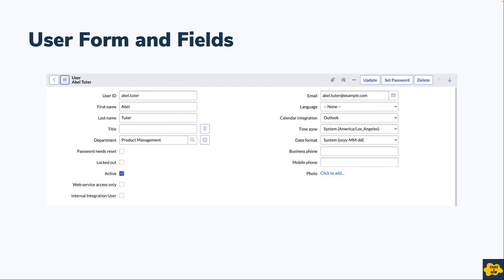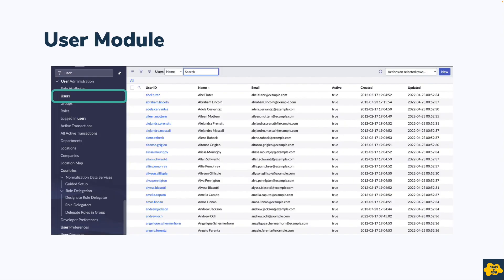The user form has fields like user ID, first name, last name, title, department, email, time zone, and date format. It also has details for mobile phone. The user ID and email will always be unique — you cannot have duplicate user IDs or duplicate email addresses.